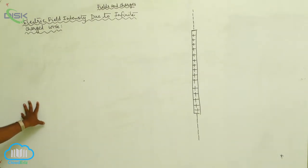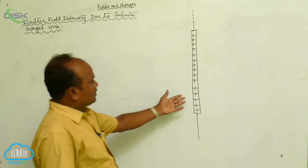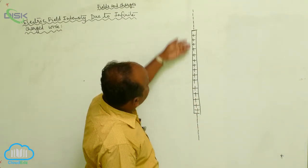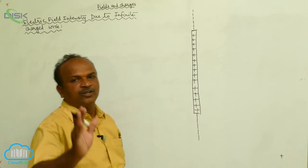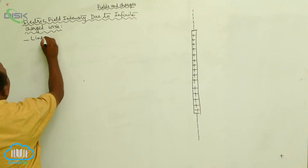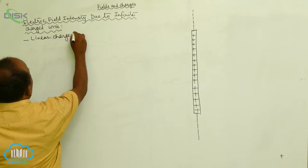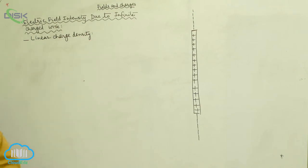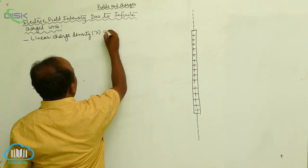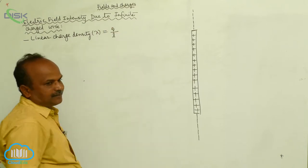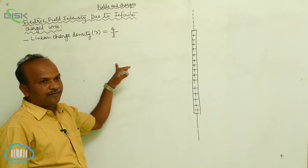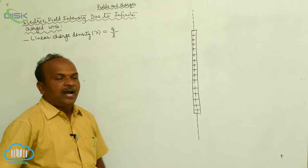This is the infinite charged wire. It is not at all a point charge — the charge is distributed linearly along the wire. In this case, you want to define a particular quantity called linear charge density, represented by lambda. The charge per unit length is called linear charge density. Therefore, lambda is equal to q divided by L.